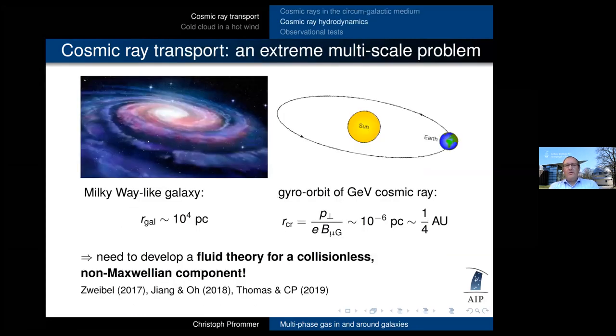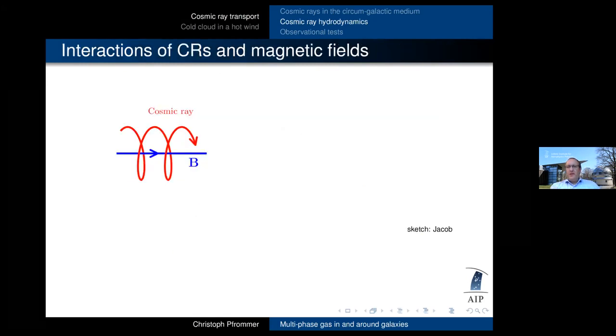So this brings me to the first topic, cosmic ray transport. That's an extreme multi-scale problem. So we want to understand and to simulate a Milky Way-like galaxy on scales of tens of kiloparsecs. But we need to account for the gyro orbit of GeV cosmic rays, which is the order of an AU. So the scale separation is 10 to the 10 linear scale. That's of course impossible to solve directly. Therefore, we need to develop a fluid theory for collision-less non-Maxwellian power law component.